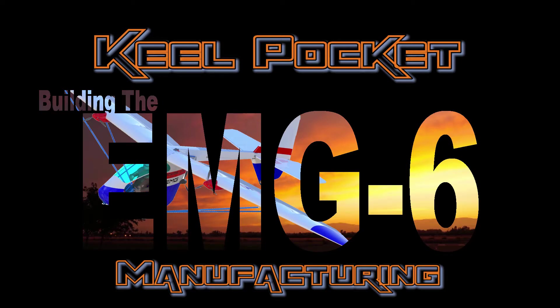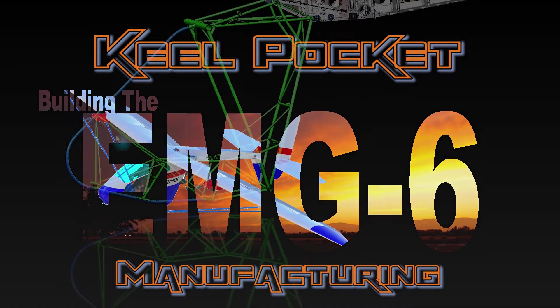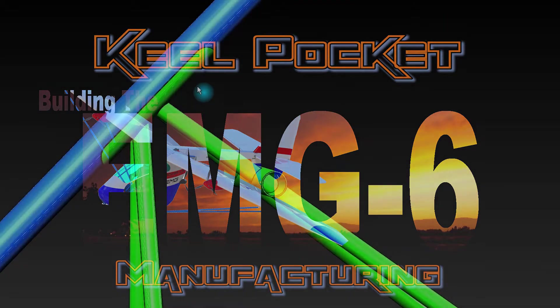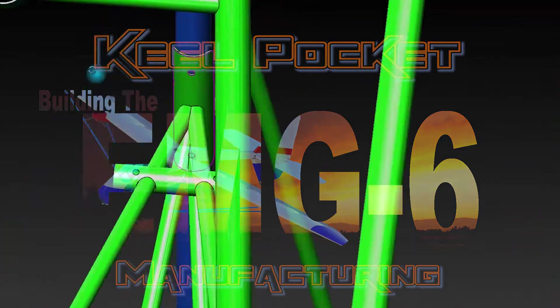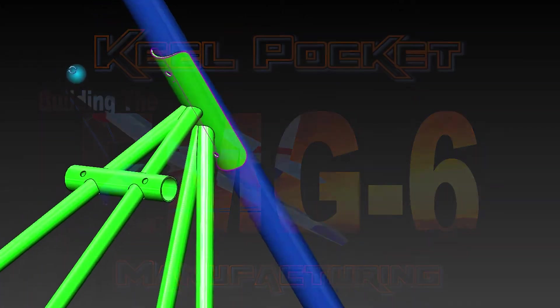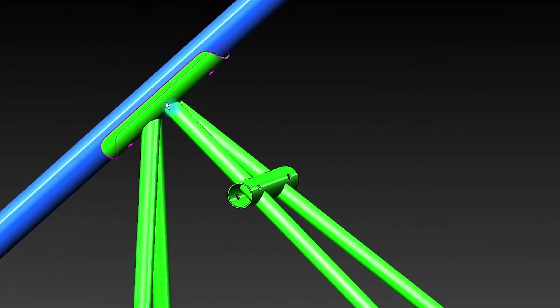Welcome back to another episode of building the EMG-6. In this episode we're going to manufacture the keel pockets that are used for the interface from the aluminum keel tube to the 4130 steel fuselage frame.